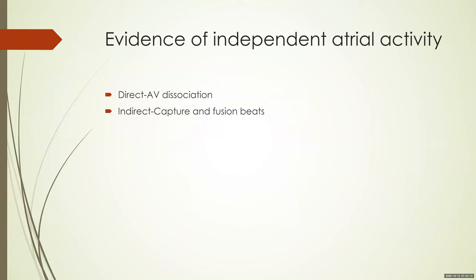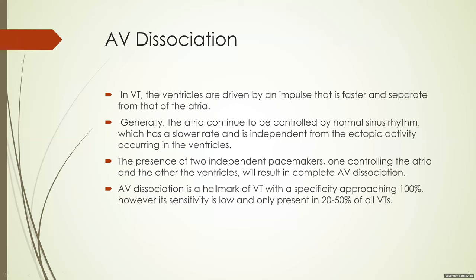Evidence of independent atrial activity is another key feature. In VT, the ventricles beat rapidly at 180–200 bpm while the atria continue beating normally at 80–90 bpm. If you can demonstrate atrial activity independent of ventricular activity, you can diagnose VT. This can be direct evidence — AV dissociation — or indirect evidence — capture or fusion beats. AV dissociation is a hallmark of VT with specificity approaching 100%, but sensitivity of only 20–50%.